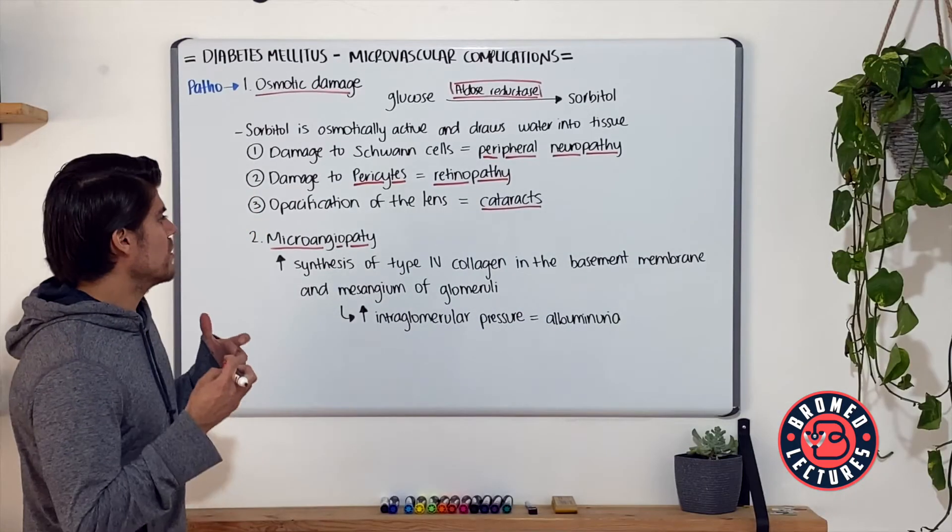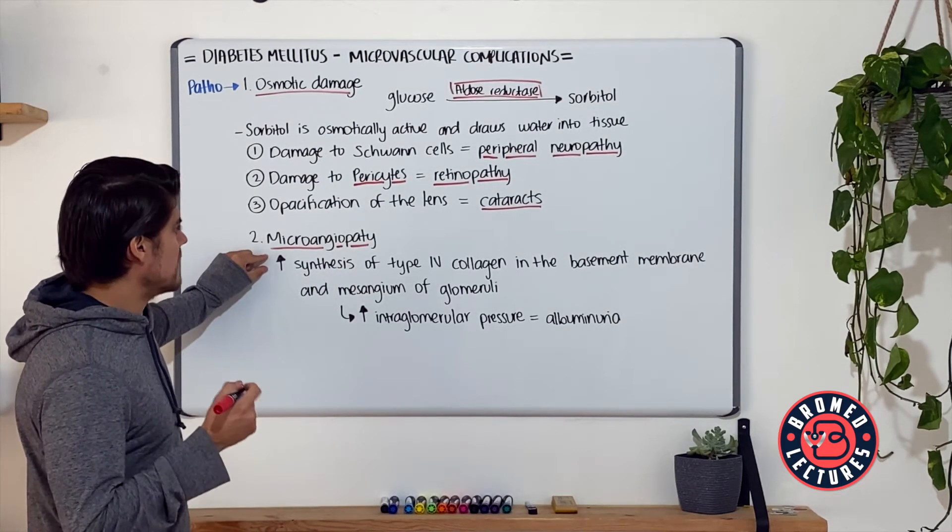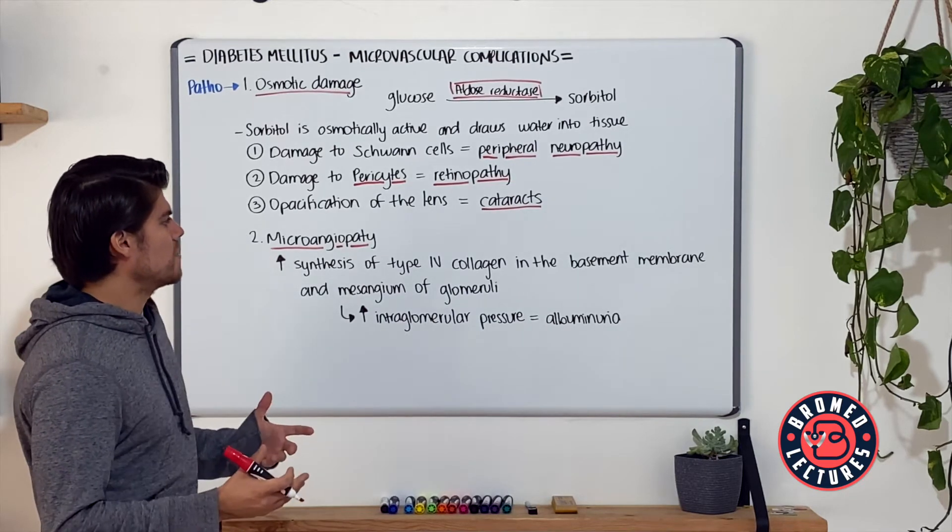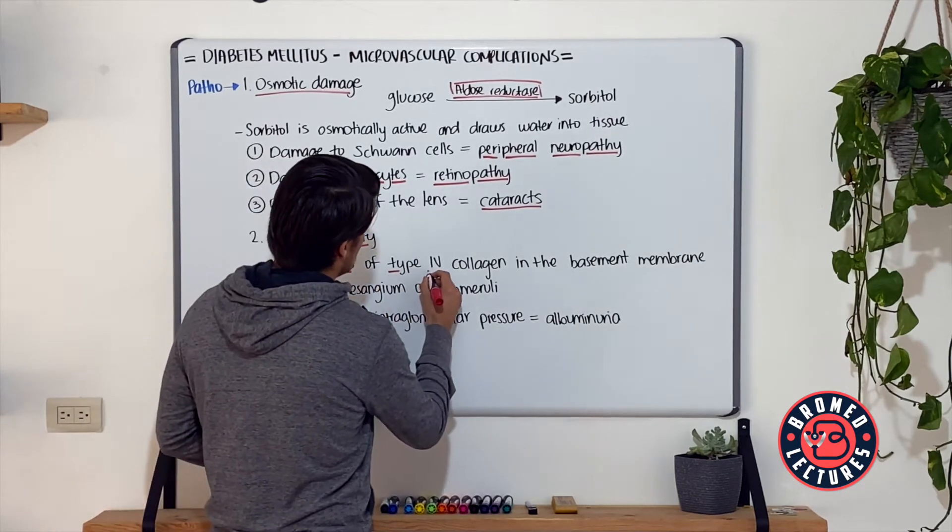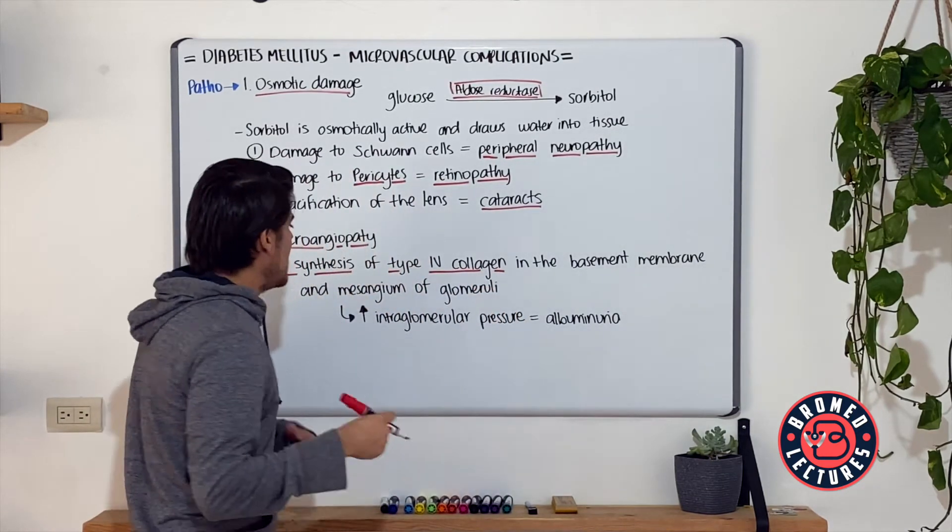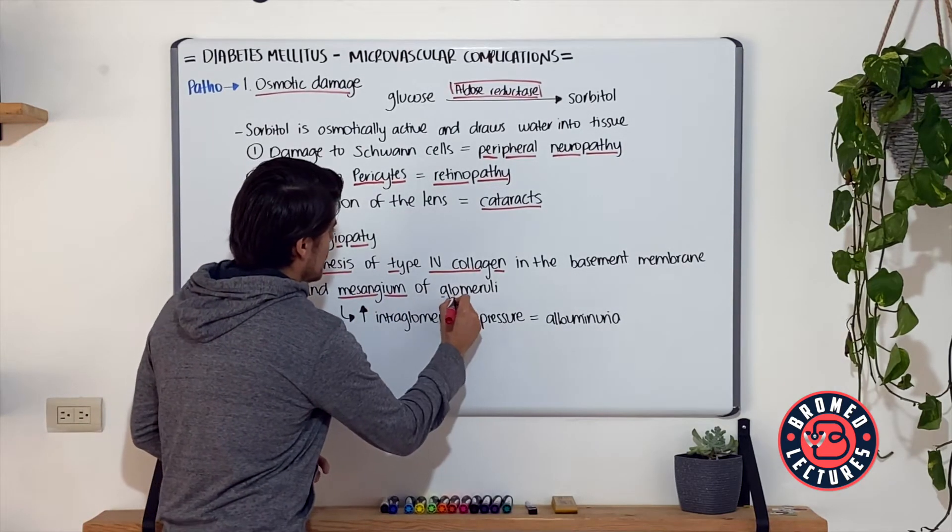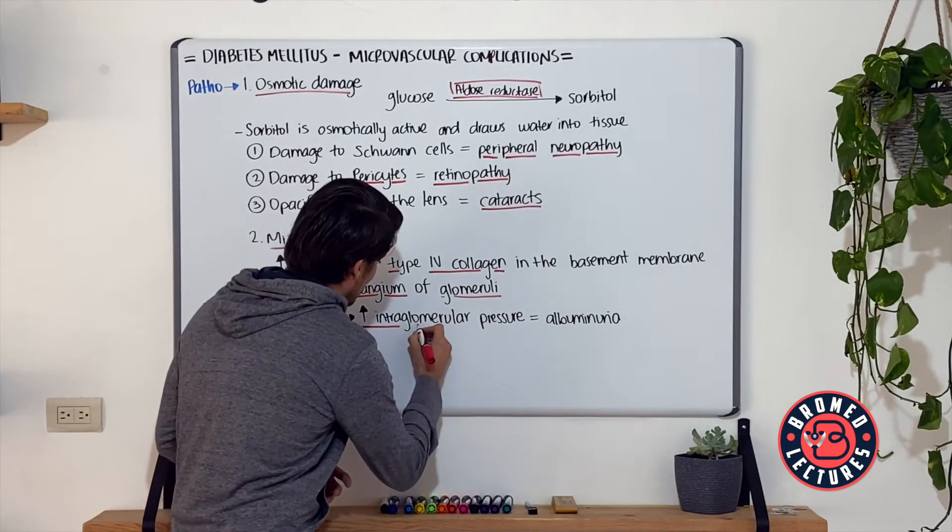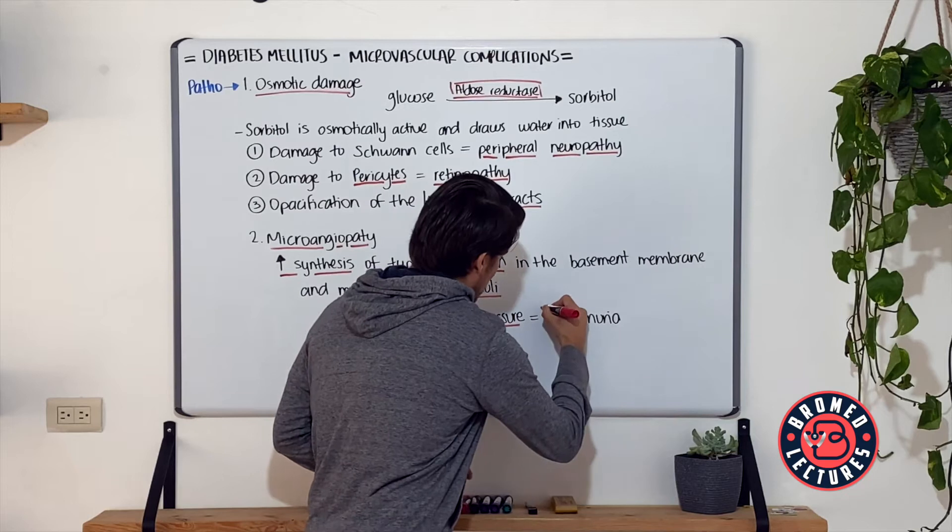In regards to the kidneys, if we have this same mechanism with glycosylation of the basement membrane, there's going to be an increase of type IV collagen synthesis in these membranes and in the mesangium of the glomeruli. That increases interglomerular pressure and presents as albuminuria in these patients.